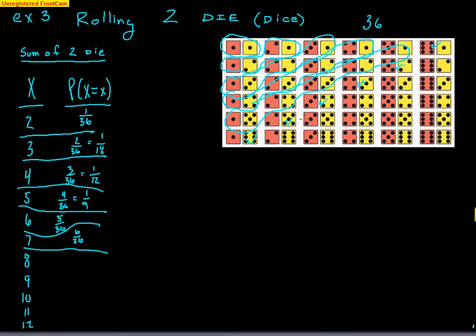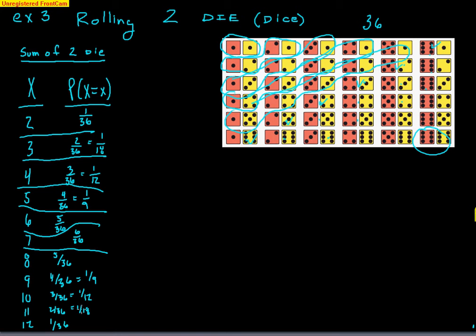A sum of 8: there are 5 ways, so 5/36. A sum of 9: 4 ways — 4/36, which is 1/9. We notice we climbed up the ladder and now we're climbing back down. A sum of 10 is 3/36, or 1/12. A sum of 11 is 2/36, or 1/18. And lastly, to get a 12 — a 6 and a 6 — there's only one way: 1/36. So this is not equally likely; a 7 is the most likely outcome at 1/6, while a 2 and a 12 are the least likely.